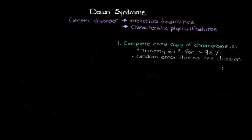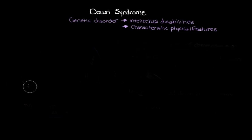Now let's take a look at some of the main signs and symptoms of down syndrome. One of the main signs is intellectual disability. The average IQ for someone with down syndrome is around that of an eight to nine year old, meaning the level of intelligence is around what we would expect for someone around that age. This can vary quite a bit — many people have more intellectual impairment and many have less — but this is about the average level we see.